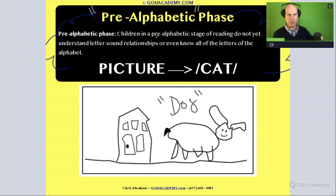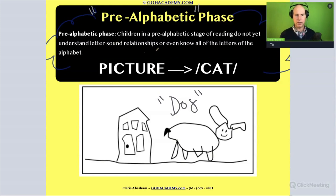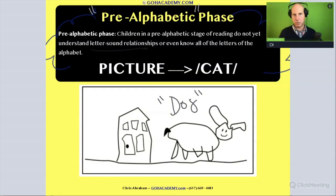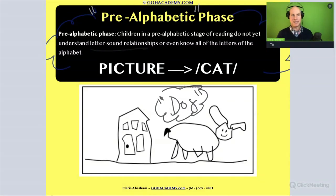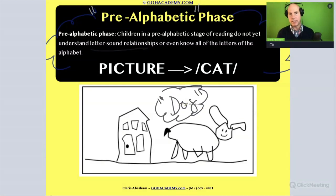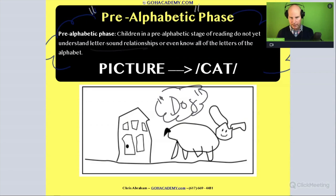Children in the pre-alphabetic stage of reading do not yet understand letter-sound relationships, meaning they don't have a background in the alphabetical principle — they may not even know all the letters of the alphabet. So they're not even at the stage of decoding a word like D-O-G. This is very, very early on.